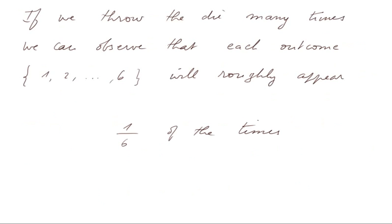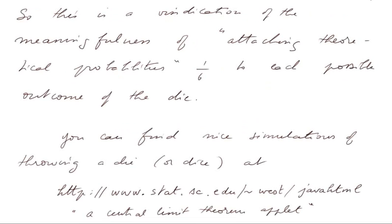If we throw the die many times, we can observe that each outcome — that is 1, 2, up to 6 — will roughly appear one-sixth of the times. So this is some sort of a vindication of the meaningfulness of attaching theoretical probabilities of 1/6 to each possible outcome of the die.